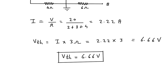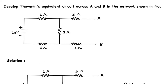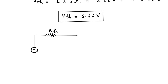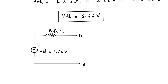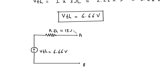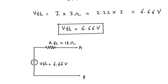Now we have the value of Vth and Rth, so from this we can draw the Thevenin equivalent circuit. The Thevenin equivalent circuit will have Rth in series with Vth, with positive and negative terminals. This is terminal A and this is terminal B. Vth is equal to 6.66 volt and Rth is equal to 13 ohm.